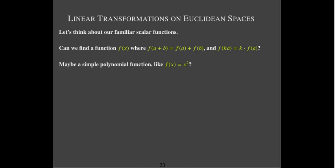F of x equals x squared — a very simple, friendly function. Does it satisfy additivity? Is (a+b)² equal to a²+b²? Clearly not. We do have an identity for (a+b)²: it's a²+2ab+b². So that extra middle term means x squared is not a linear transformation.